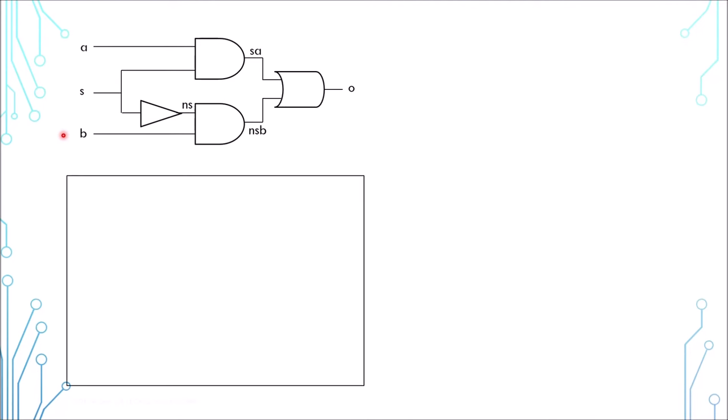First, you use module to represent the design. You provide a name for the design. In this case, it is called MUX, which is a short term for multiplexer. You describe its ports in the bracket, which are three input ports A, B and S, and one output port O.